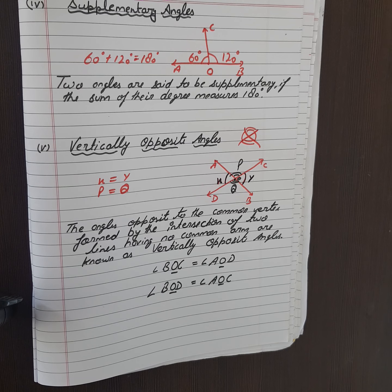Angle BOC equals angle AOD. Arms are not common. We will write angle BOC equals angle AOD. In this, the vertex is common but not the arms. If the other angle is being written here, angle BOD equals angle AOC. Again, the vertex is common but not the arms.